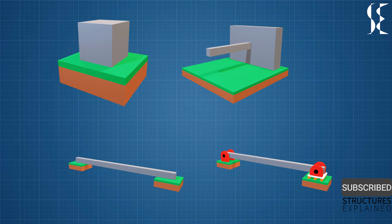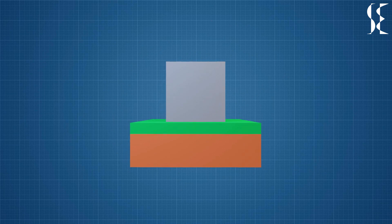First of all, let us understand what a reaction is. Let us consider a block of concrete lying on the ground. In this arrangement, the block is applying a force of mass times acceleration to the ground. In return, the ground applies equal and opposite force as per Newton's third law of motion. This force is called reaction.